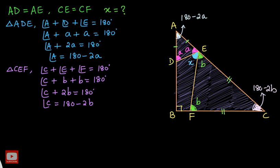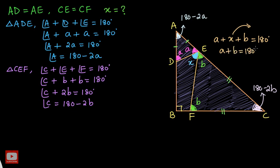In the figure, angle A, X, and B form a linear pair, so they add up to 180 degrees. From this, A plus X plus B equals 180 degrees. I want to find A plus B, so taking X to the other side: A plus B equals 180 minus X. This will be a useful result that we will use later.